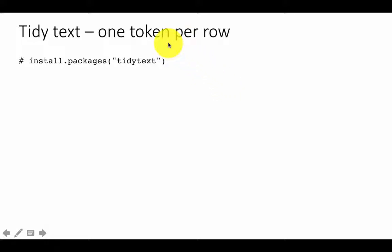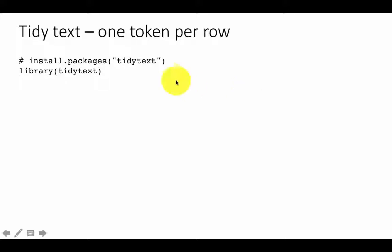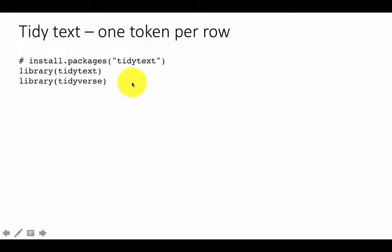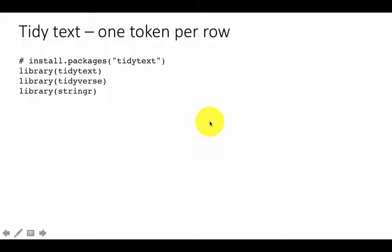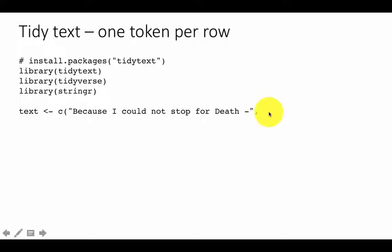To use tidytext you have to install the package by running install.packages('tidytext'). The code file I've given you will contain that as well. Then we load the library with library(tidytext). We are also going to use dplyr and many other functions already in tidyverse that we've been using up to now — tidytext is built to go hand in hand with tidyverse. We'll also use the stringr library because it has a lot of string processing features including regular expressions that we've already looked at.